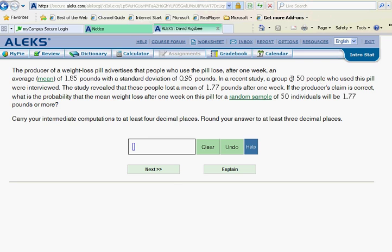Here we go. The producer of a weight loss pill advertises that people who use the pill lose, after one week, an average of 1.85 pounds with a standard deviation of 0.95. In a recent study, a group of 50 people...